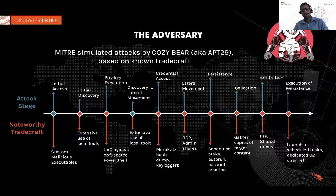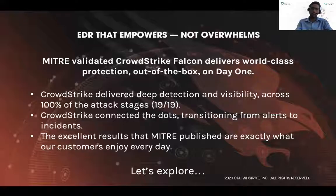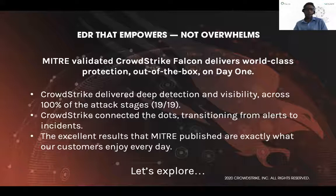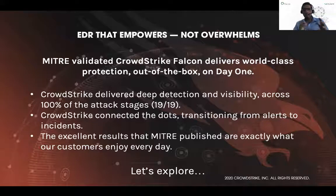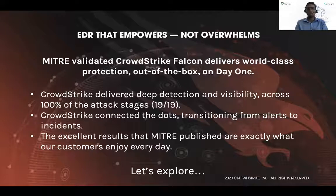Modifying the system by scheduled tasks, by auto-run, by adding an admin account, by elevating privileges, mounting file shares, trying lateral movement, communicating with a C2 channel — that's what a modern attack looks like. The conclusions of MITRE when they evaluated CrowdStrike Falcon were that CrowdStrike was able to detect the attack at 100% of the stages, 19 out of 19. And more importantly, it's not anymore a game of visibility of detection. It's a game of contextualization. The tool that is able to stop a modern attack has to be able to connect the dots.